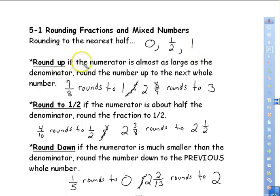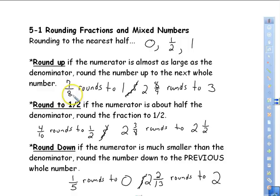Rounding up: this is when the numerator is almost as large as the denominator — round the number up to the next whole number. For example, 7/8: the numerator and denominator are nearly the same, meaning we have 8 slices of pizza for one whole and seven are remaining, so it rounds to one.